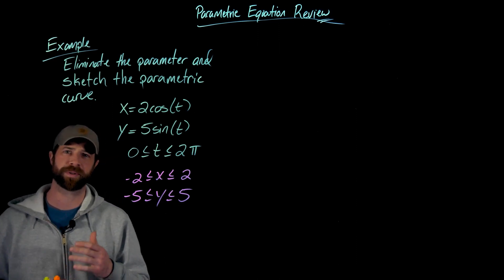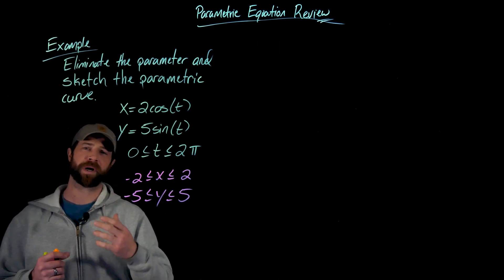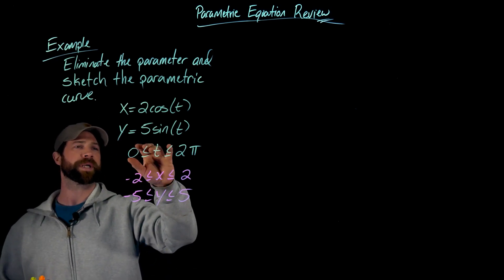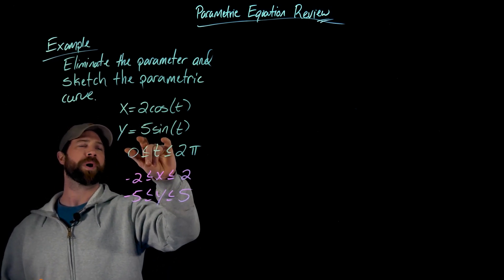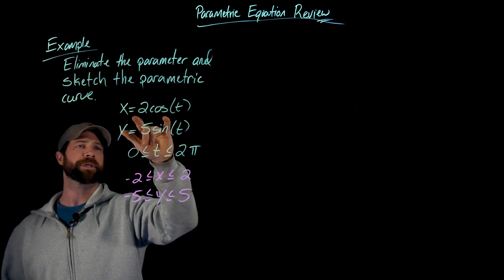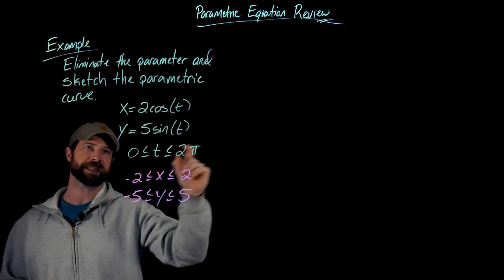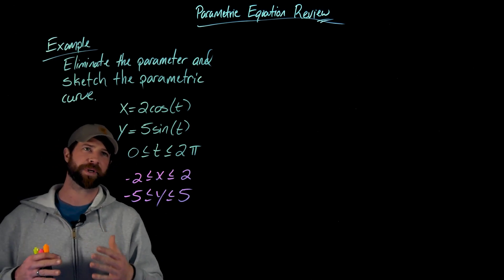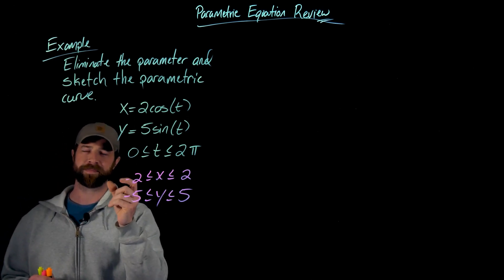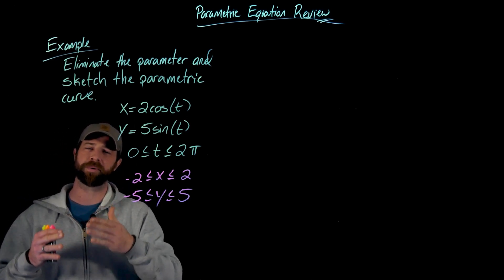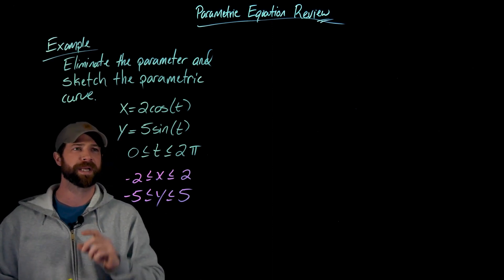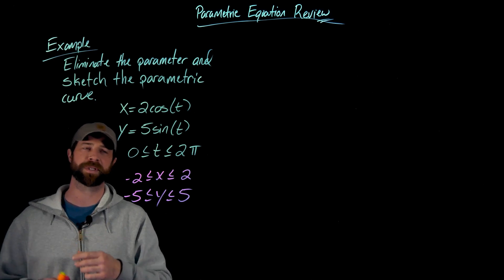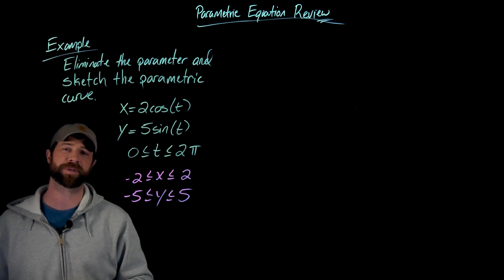So the next thing I'm going to do is eliminate the parameter. Usually I would look at x first and solve for x, but that's going to involve invoking the cosine inverse function and things get a little hairy at that point because the cosine inverse function has a very restricted domain and range. What I can do instead so I don't lose information is use a trig identity.